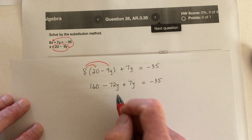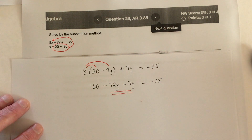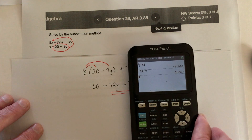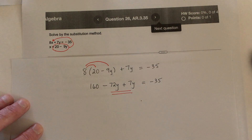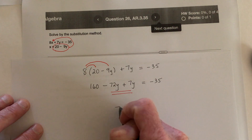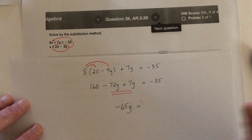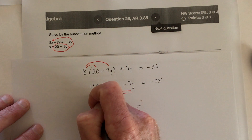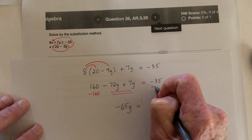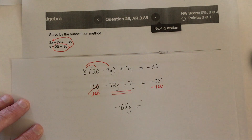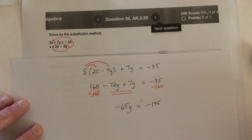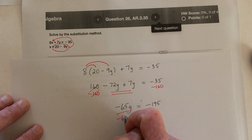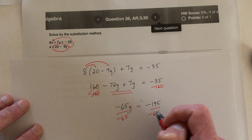So next what we need to do is combine like terms. What is negative 72 plus 7? That's negative 65. So right here we have negative 65y. And I need to get the numbers on the right side, so I'll subtract 160 so that these can cancel. And then on the right side, this is a grand total of negative 195. Next, divide by negative 65 on both sides — cancel, cancel. So we get y equals...